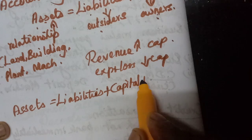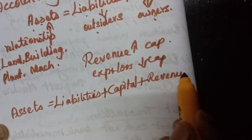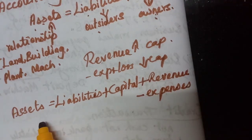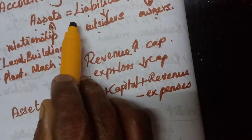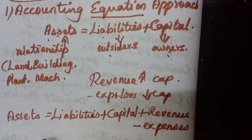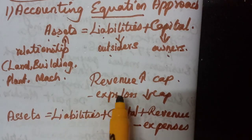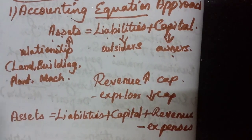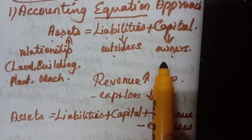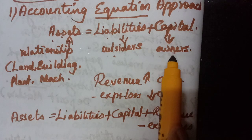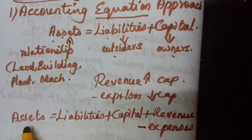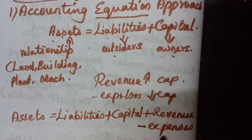If the owner earns some revenue, that will increase the capital; any expense or loss will reduce the capital. So we can derive the final equation: Assets = Liabilities + Capital + Revenue − Expenses.